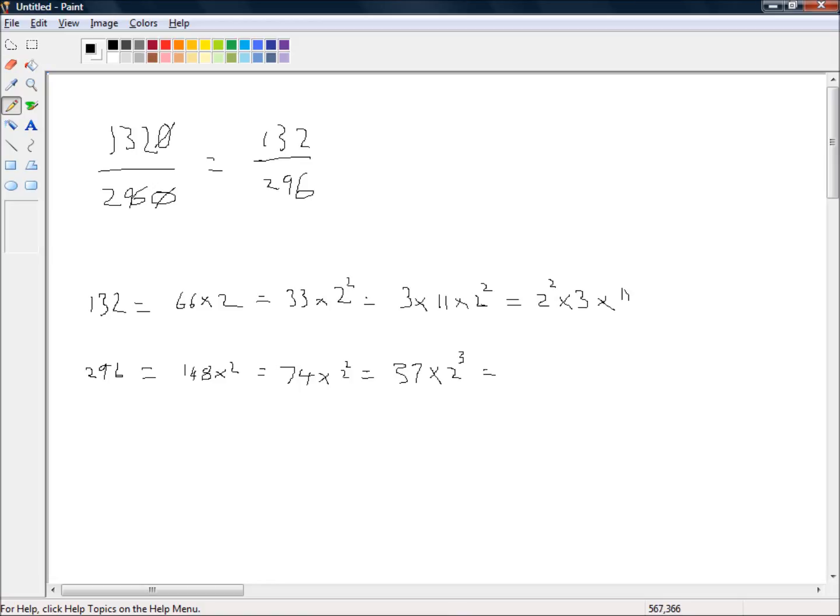So what do we have? We have 2 cubed times 37. So this number is, let's get that cubed cancels with that. And that's it, that's just 3 times 11 on the top, which is 33 on the top, divided by 2 times 37, which is 74. So our 1,320 divided by 2,960 is 33 over 74.